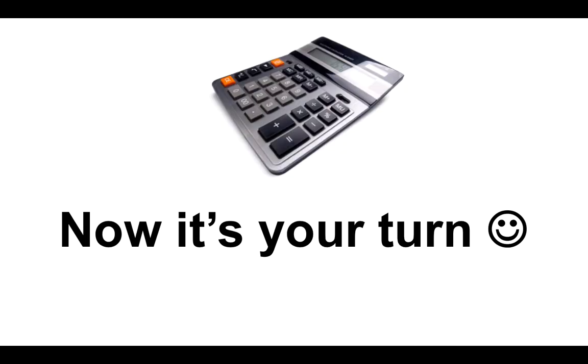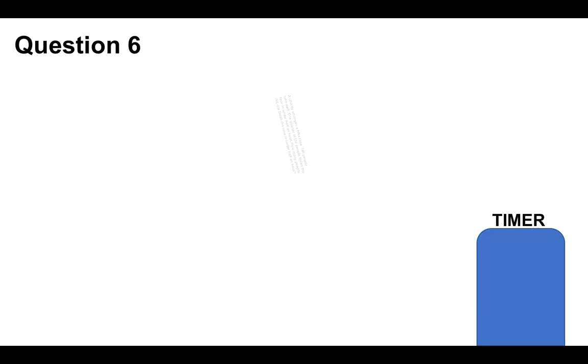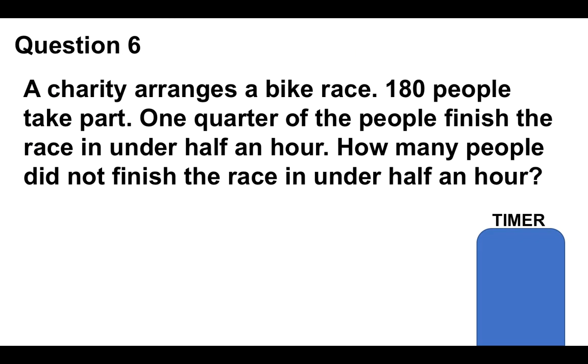So again, now it's your turn. Like I say, if you need to use a calculator, you can. Put your answer in the comments section below. Question number six: A charity arranges a bike race. 180 people take part. One quarter of the people finish the race in under half an hour. How many people did not finish the race in under half an hour? Off you go.